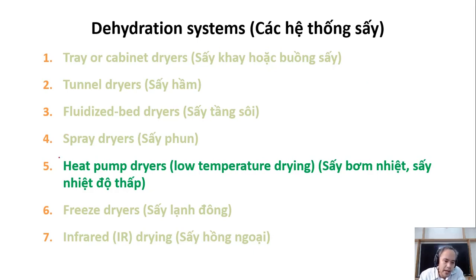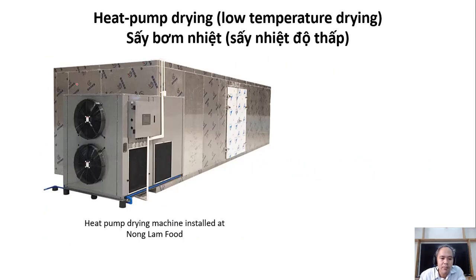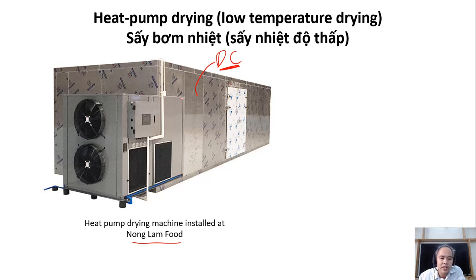We now go to the fifth technology: heat pump dryers. This is interesting and is applied more and more widely nowadays. This is an example of a heat pump drying system. We have a drying chamber, just a normal drying chamber like the other technologies, but here they have a mechanical refrigerator — a cooling system, like a fridge or an air conditioner.